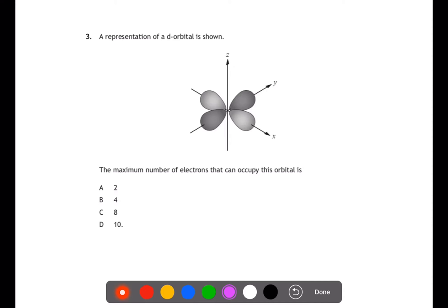Here we have a picture of a D orbital and we want to know the maximum number of electrons that can occupy this orbital. Any orbital can only hold two electrons. This orbital has four parts to it but it can only hold two electrons. This orbital is the dx squared minus y squared as it is on the axes here.